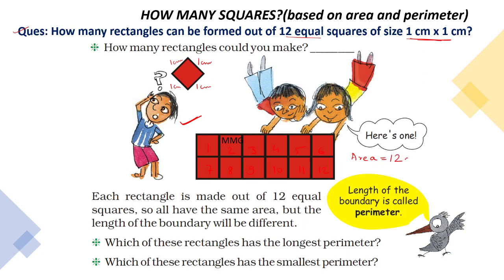It means the area of this rectangle is 12 cm square. Now we have to find the perimeter. The length is 6 cm because it is made up of 6 equal squares of size 1 cm, and opposite sides of a rectangle are equal, so the opposite length is also 6 cm. The width is 2 cm because it is made up of 2 equal squares of size 1 cm, and the opposite side is again 2 cm.